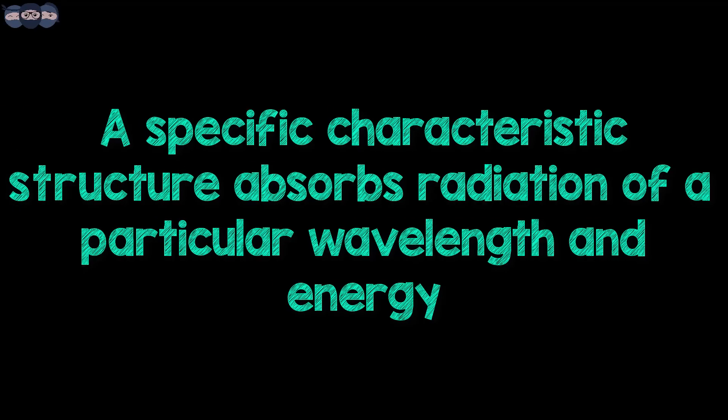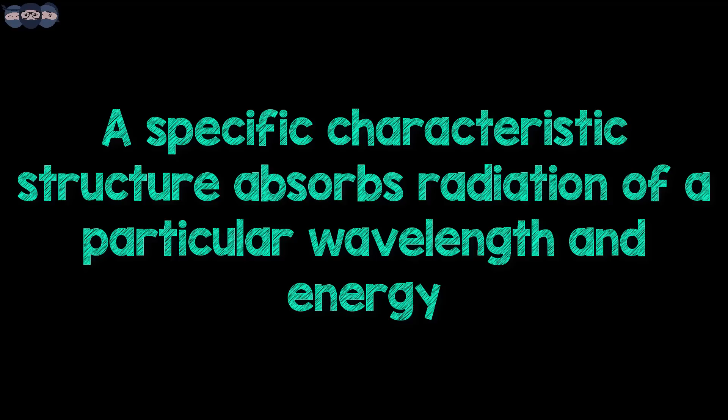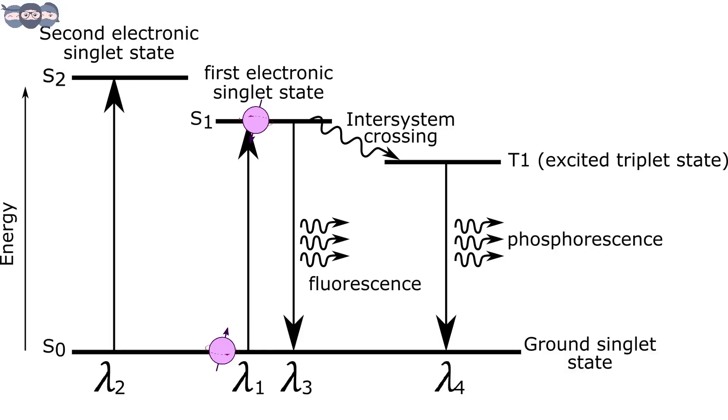This is because only radiation of a specific wavelength and energy is absorbed by a characteristic structure. As seen in the diagram, lambda 1 refers to the wavelength of light absorbed by the molecules to transition to first electronic singlet state.